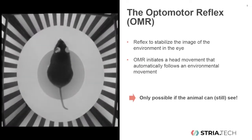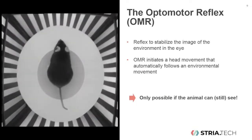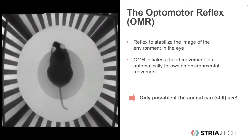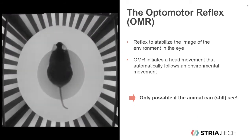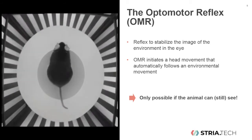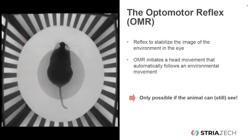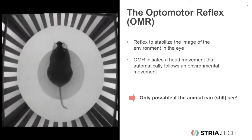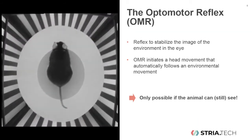One widely used approach is measuring the optomotor reflex, or OMR, as an indicator of visual ability. You can see the optomotor reflex in action in this video where we have recorded a mouse from above. The mouse follows this rotating stripe pattern with its gaze.